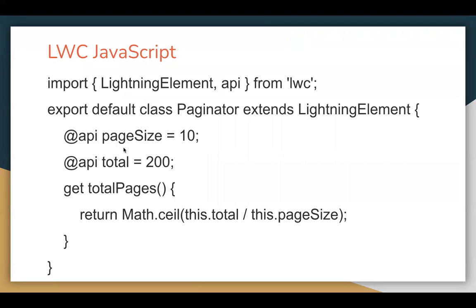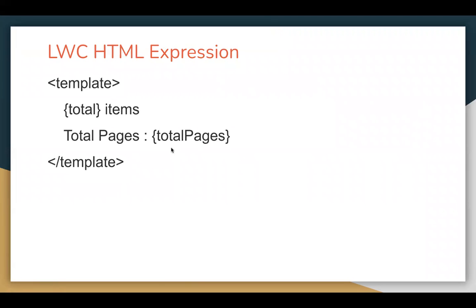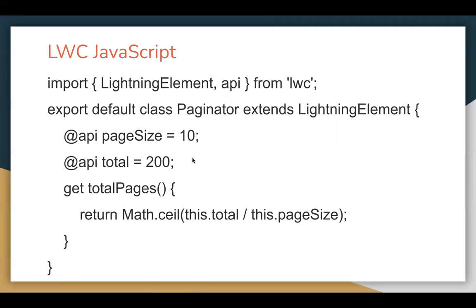In this JavaScript file we have two properties: pageSize and total. In Lightning Web Component you can also define getter properties — a special property written with the get keyword that can contain code inside curly braces. Whatever is the result of that calculation will be returned to the HTML file. The property name is totalPages and it is treated as a getter. The difference between a normal property and a getter will be demonstrated in upcoming videos.